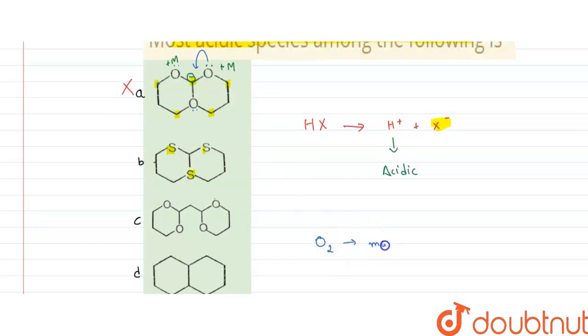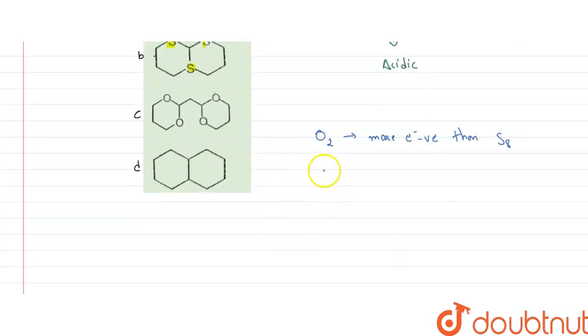plus M is more electronegative than sulfur. So therefore, it is a better plus M donating group. That means its plus M is more stronger.